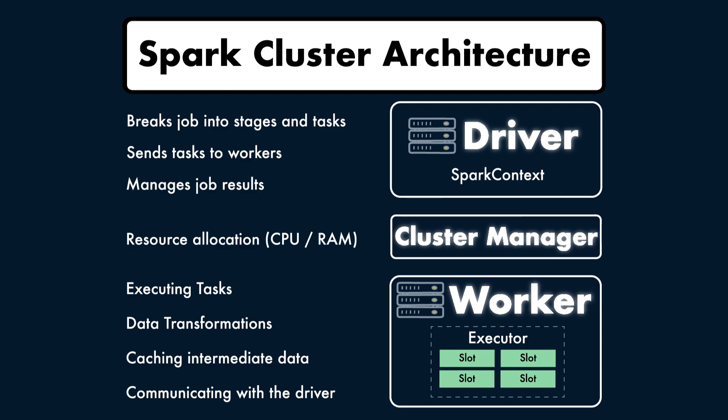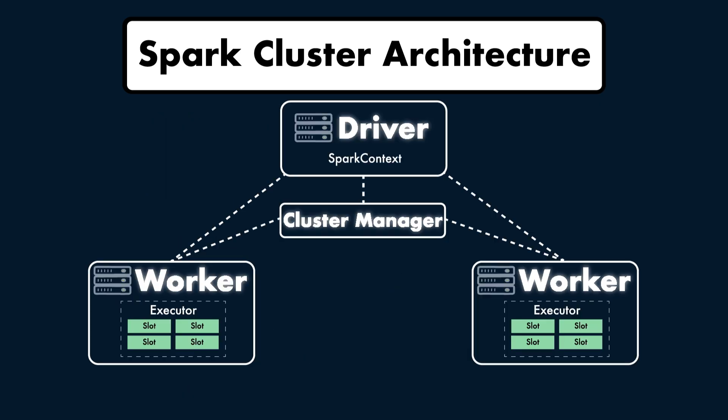When Spark distributes tasks, each executor processes a different slice of the data. Both the driver and executor processes work in Java virtual machines, and this parallelism is what makes Spark so powerful. The worker nodes contain slots — the number of slots is dependent on the number of cores and CPUs in that node. Each slot can run one task at a time. So for example, if an executor has four cores, then it can handle four slots, meaning four tasks can run in parallel on that executor.